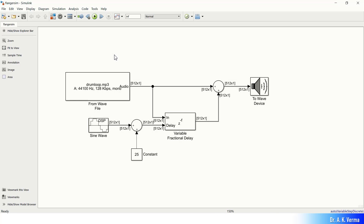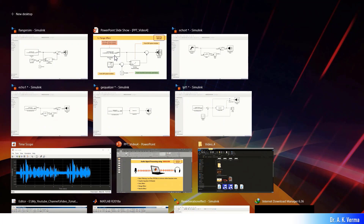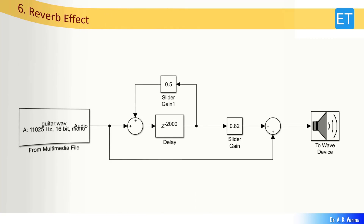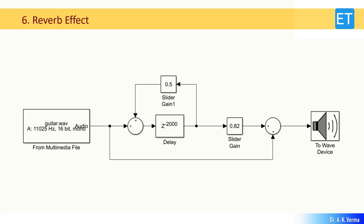From the audio you can clearly hear the variable delay shifting in the manner of a sine wave — from low to high, high to low, and back. This was the flange effect. Now let's move to the next effect — reverberation, known in short as reverb.